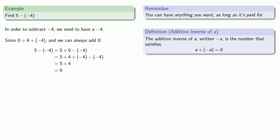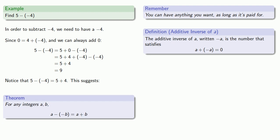We might take a look at the numbers involved — 5, 4, and 9 — and we know that 5 minus the additive inverse of 4 is 9, which is the same as 5 plus 4. This suggests the following result: for any integers a and b, a minus the additive inverse of b is the same as a plus b.